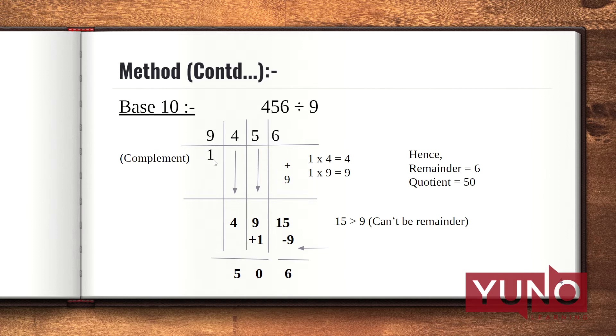Multiplying 4 with 1 gives me 4, and I have added this 4 with 5. So 4 plus 5 equals 9. Now this 9 is again multiplied with 1, that is 9 into 1, and added to 6, which gives me 15 here. But the problem is 15 is greater than the divisor 9 and hence cannot be the remainder. So we subtract 9 from it, which gives us 6 as our remainder, and add 1 to the remaining digits, which gives us 50 as quotient.